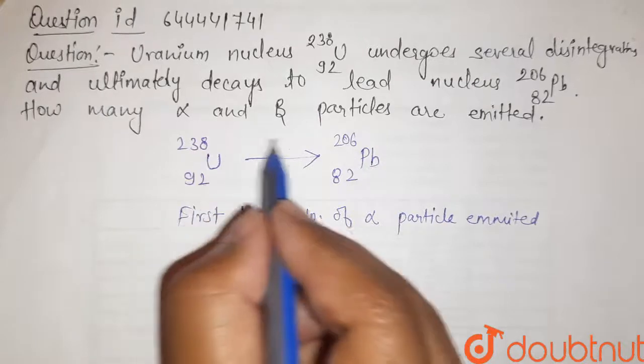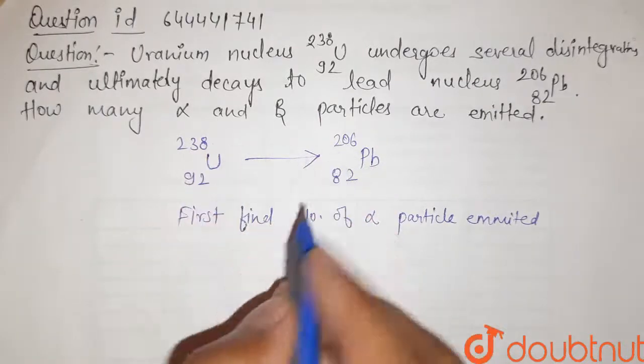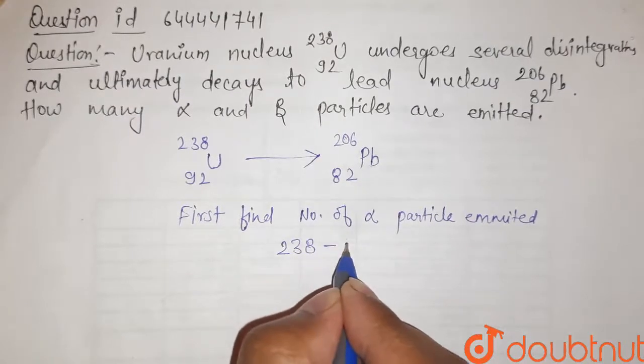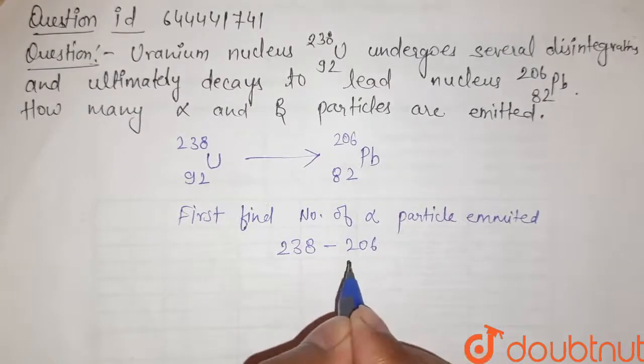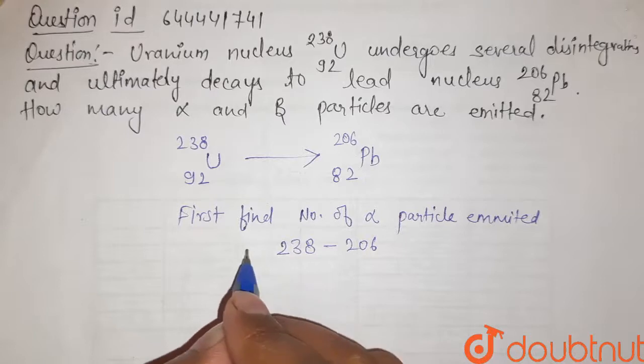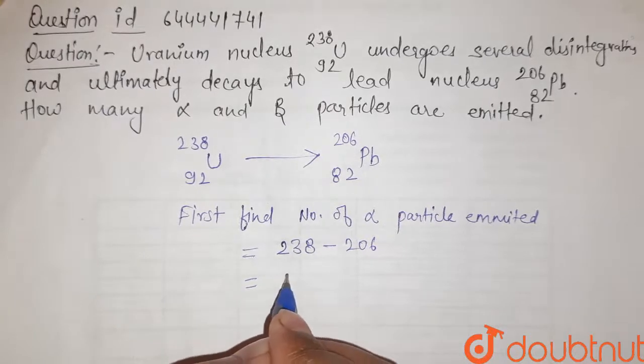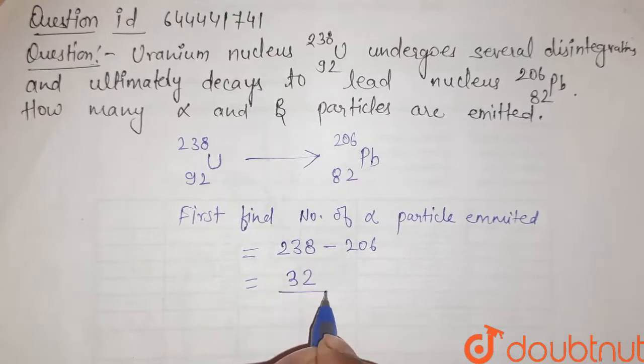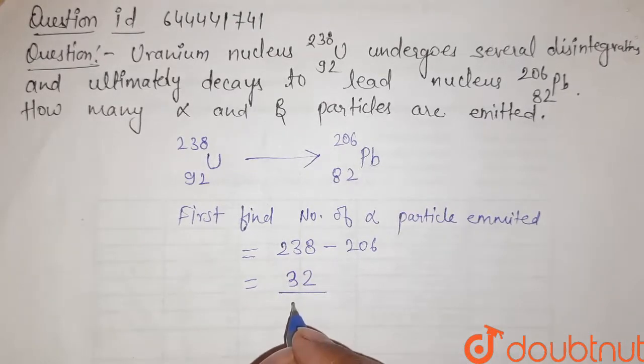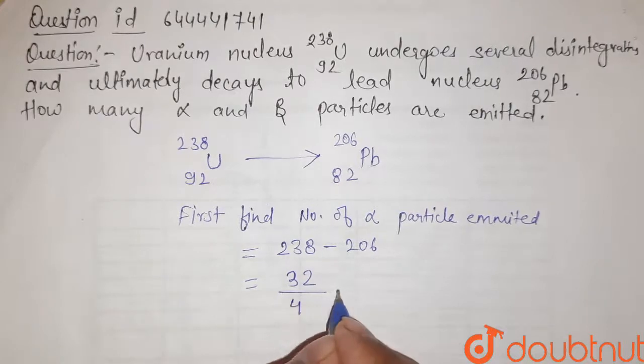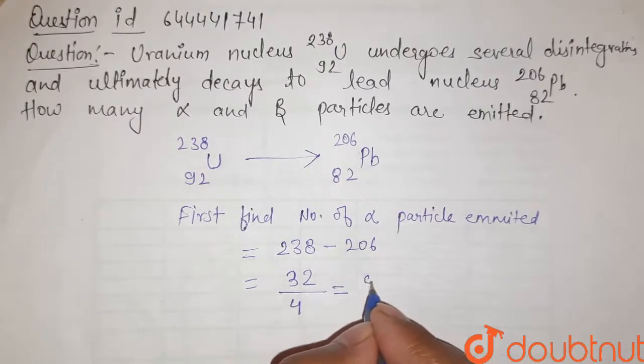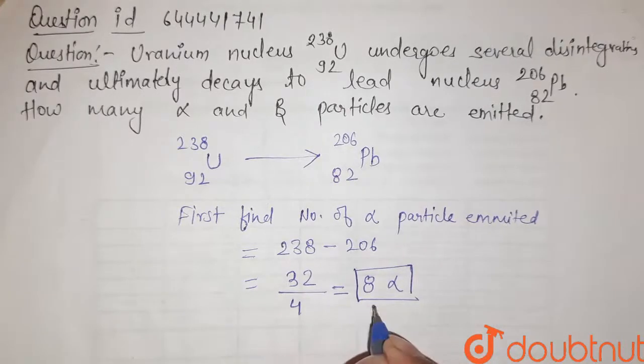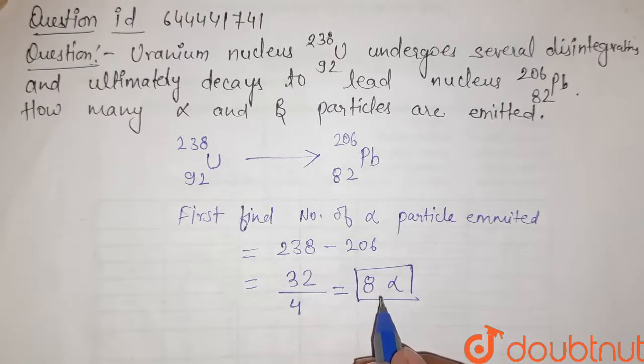So there is a change in mass number of 238 minus 206, which is equal to 32 units. And mass of one alpha particle is 4 units, so it gives us 8 alpha particles. 8 alpha particles are emitted.